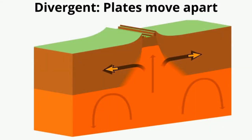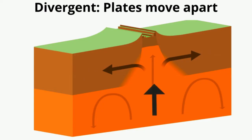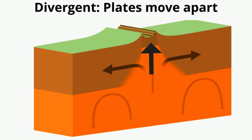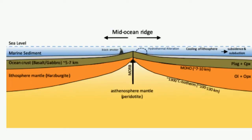Divergent boundaries are when two plates move away from each other. The separation allows the asthenosphere to rise towards the surface and partially melt. This melting creates magma which erupts as lava, and then the lava cools and hardens to create new rock and ocean floor or new continental crust. As the crust and upper part of the asthenosphere cool and become rigid, they form new lithosphere, like mid-ocean ridges.